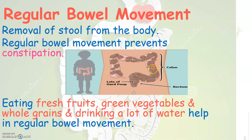As you can see here in the picture, this is the large intestine. The waste matter, or otherwise the undigested food, is piled up here in the large intestine, and this leads to constipation. Eating fresh fruits, green vegetables and whole grains along with drinking a lot of water will help in regular bowel movement, and thus we can get rid of constipation too.